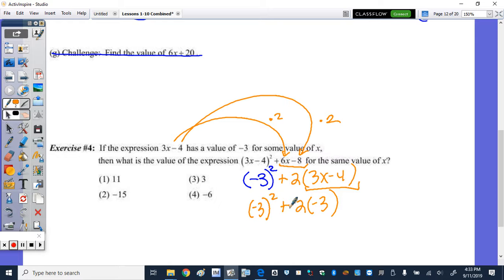So let's bring down the negative 3 squared and do the math. So negative 3 squared, remember, is negative 3 times negative 3 or positive 9, plus 2 times negative 3 is negative 6. And 9 plus a negative 6 is 3. So that's answer choice 3.